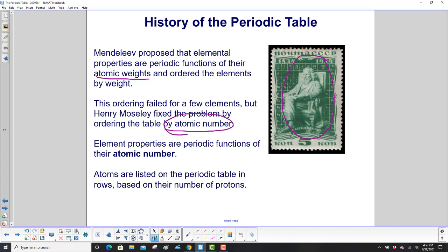Element properties are periodic functions of their atomic number. So, atoms are listed on the periodic table in rows, based on their number of protons, which of course is the atomic number.